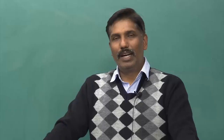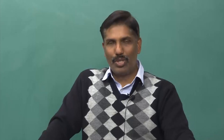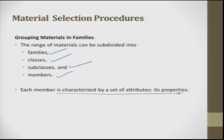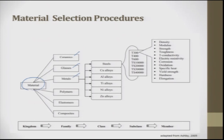Like taxonomy in biology, in material selection we follow a taxonomy with family, class, subclass, and members. A range of materials can be subdivided into families, families into classes, classes into subclasses, and subclasses into members. Each member is characterized by a set of attributes — its properties. The families are: ceramic, glass, metal, polymer, elastomer, and composite, all attached to a kingdom called material.